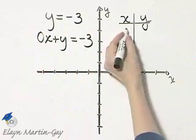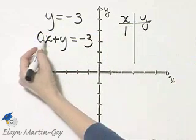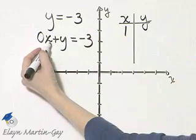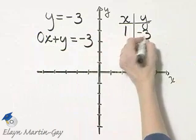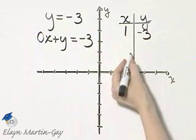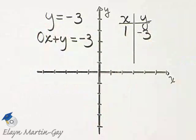No matter what value x is, for example, let's let x be say 1. What is 0 times 1? Well, that's 0, so y is equal to negative 3. Can you see no matter what value you let x become, y must be negative 3.